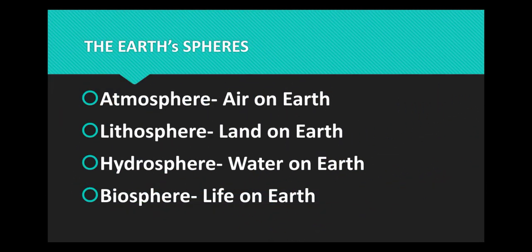In short: atmosphere is air on Earth; hydrosphere is water on Earth including soil, ice, and liquid water; lithosphere is land on Earth including rock and soil.